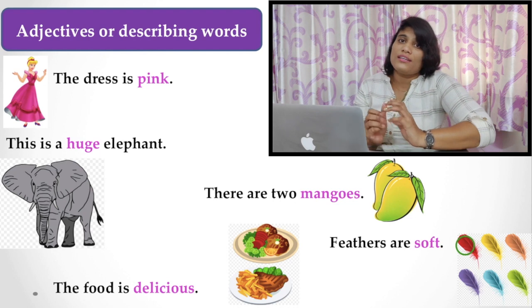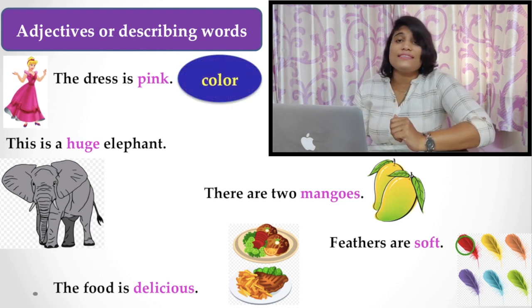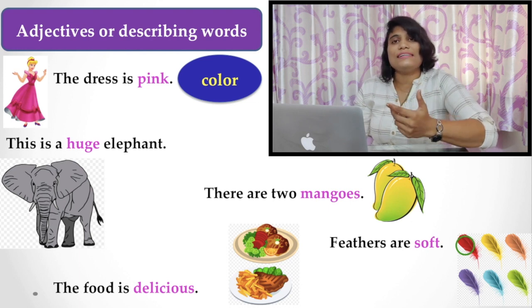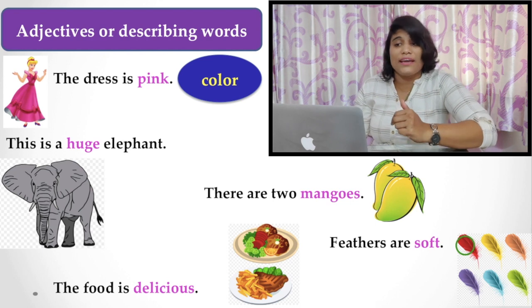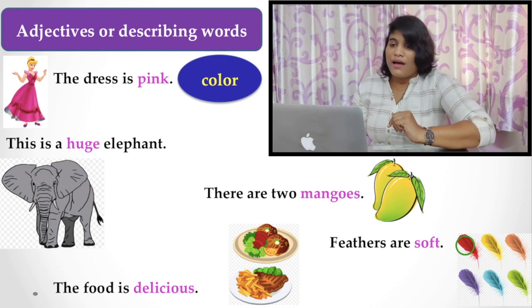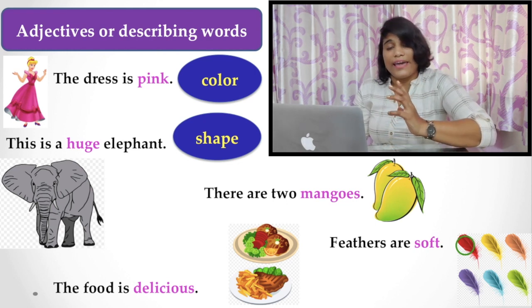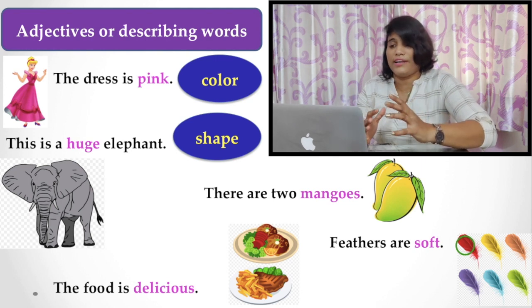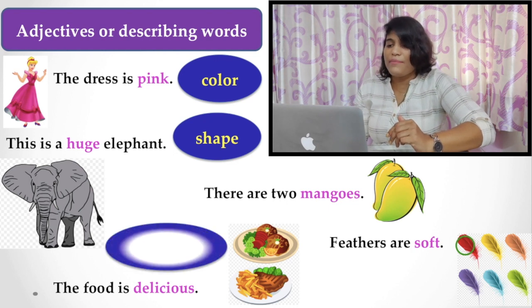Now, the describing words or the adjective. What are they? The dress is pink. So which color is the dress? That is, the answer is pink. So the word pink describes the color of the dress. So it is an adjective. This is a huge elephant. Huge elephant. The word huge expresses the shape of the elephant, that is, describes the noun elephant.